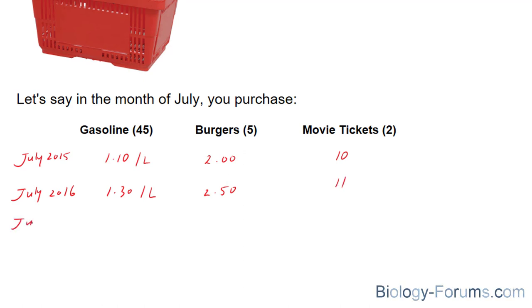And finally, in July 2017, you spent $1.20 on gasoline, $2.50 per every burger, and $15 for the two movie tickets.